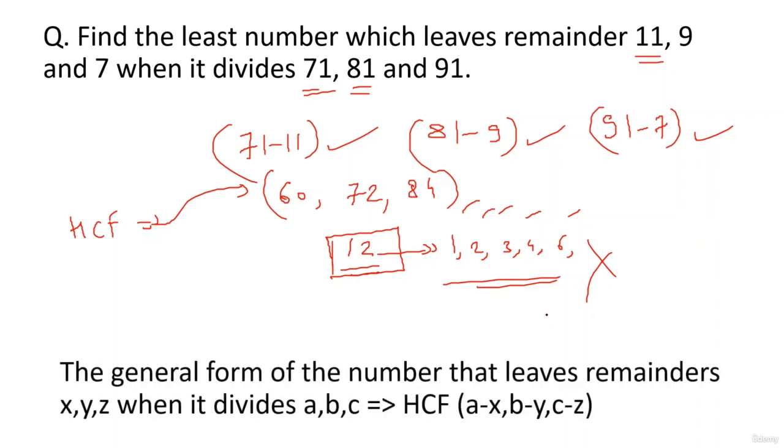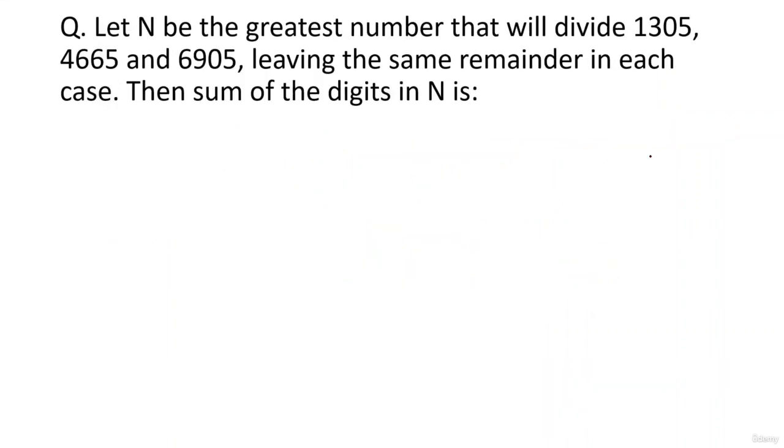The HCF model one tells you that general form of the number that leaves remainders X, Y and Z when it divides A, B and C will be HCF of their basic differences, the difference of the divisor and the remainder.